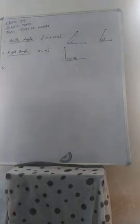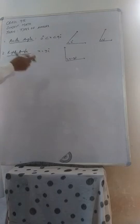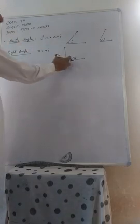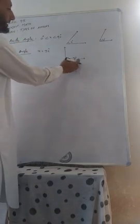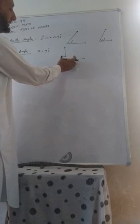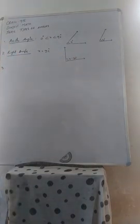Number 2, the right angle. The right angle is that angle whose measure is equal to 90 degree. Here we have also made a right angle, so it is equal to 90 degree.